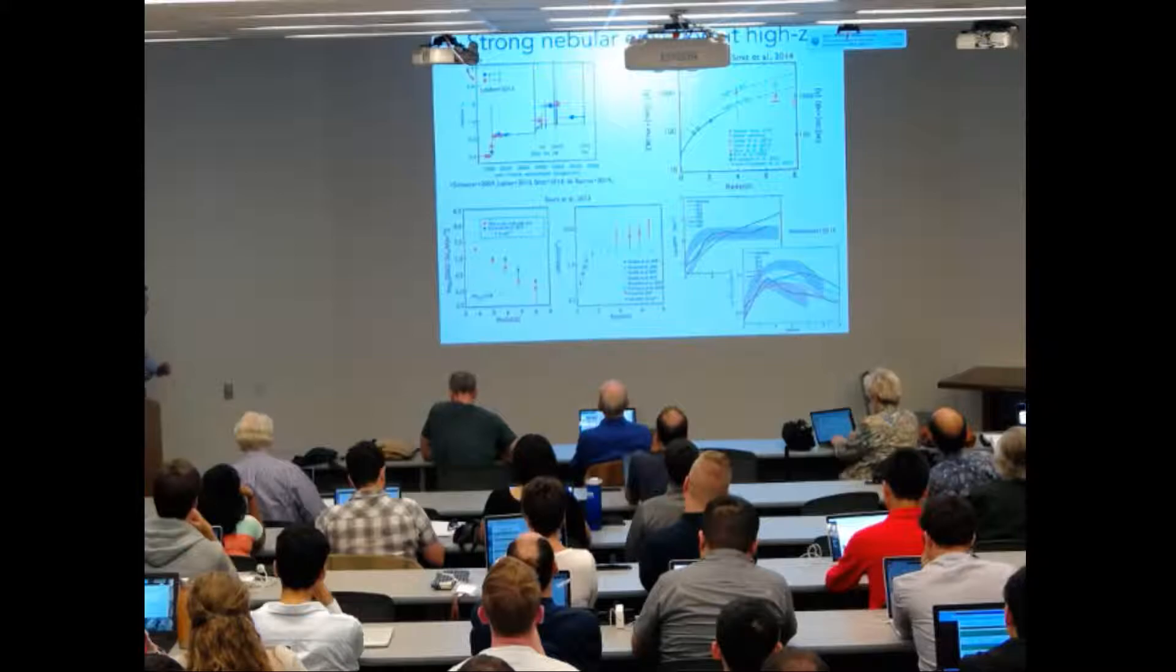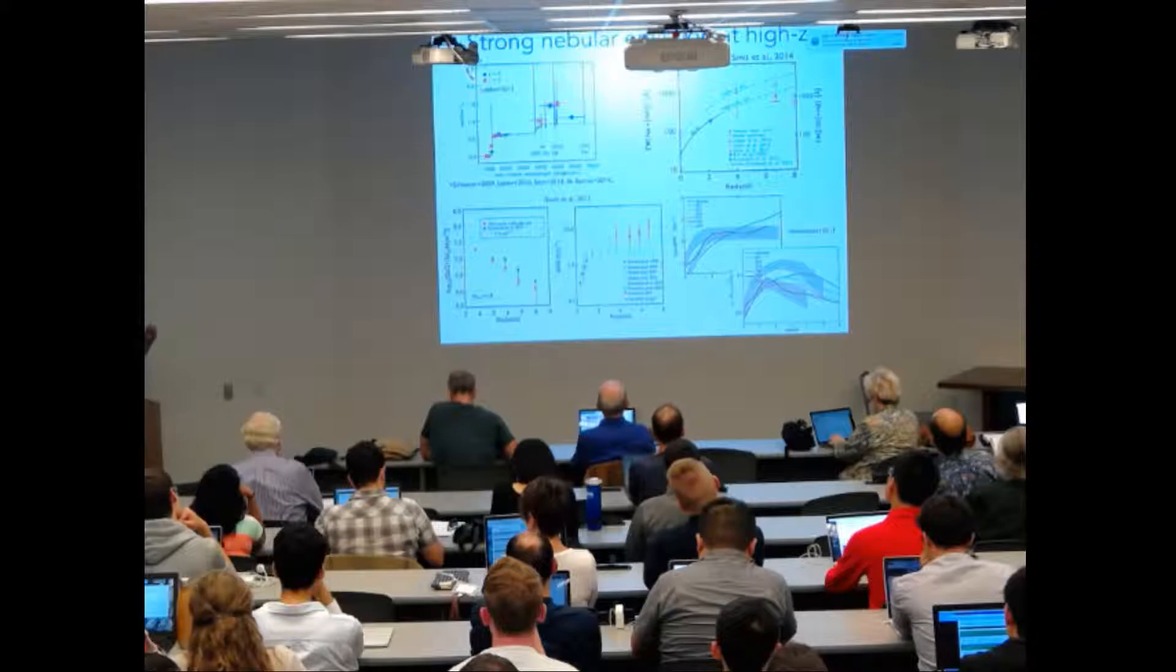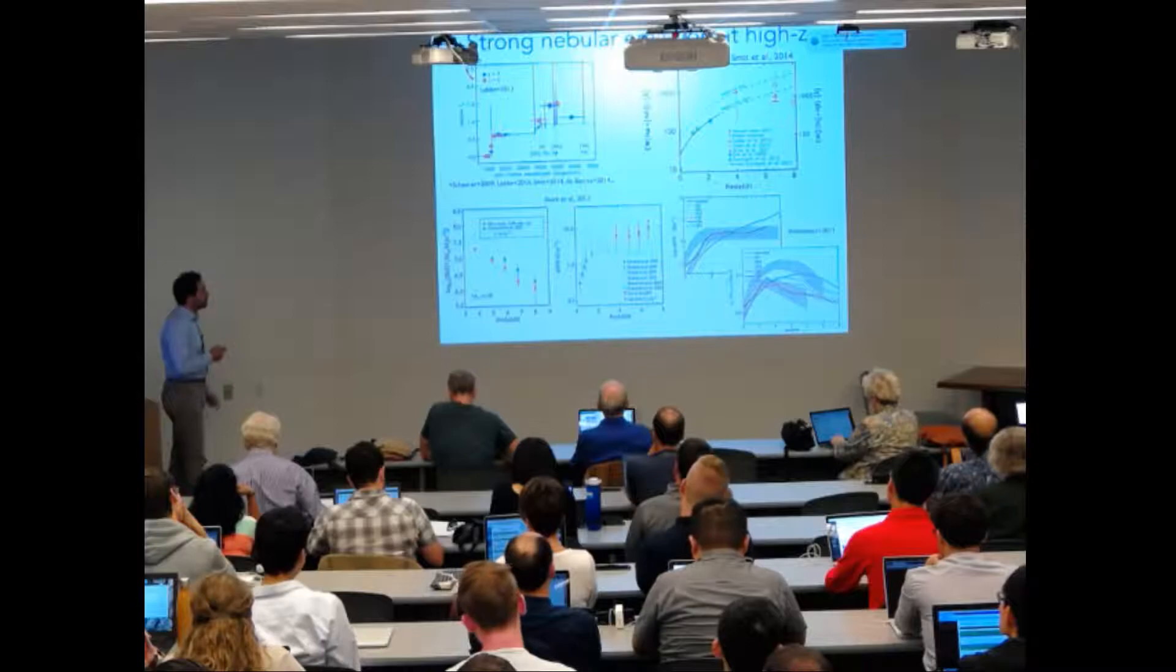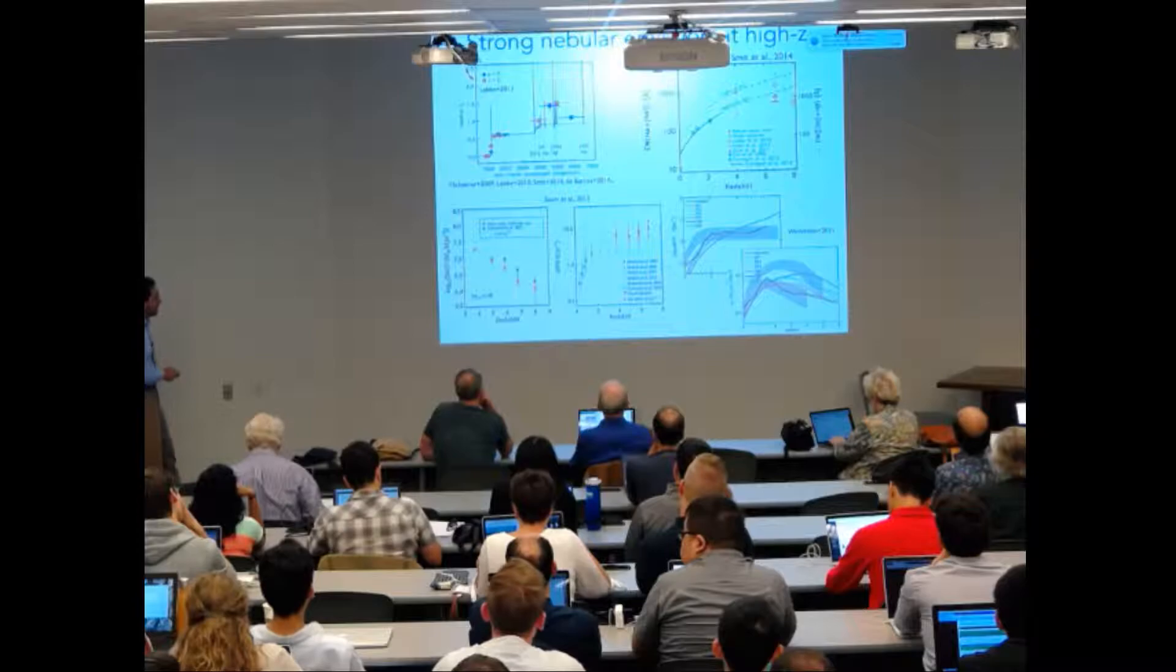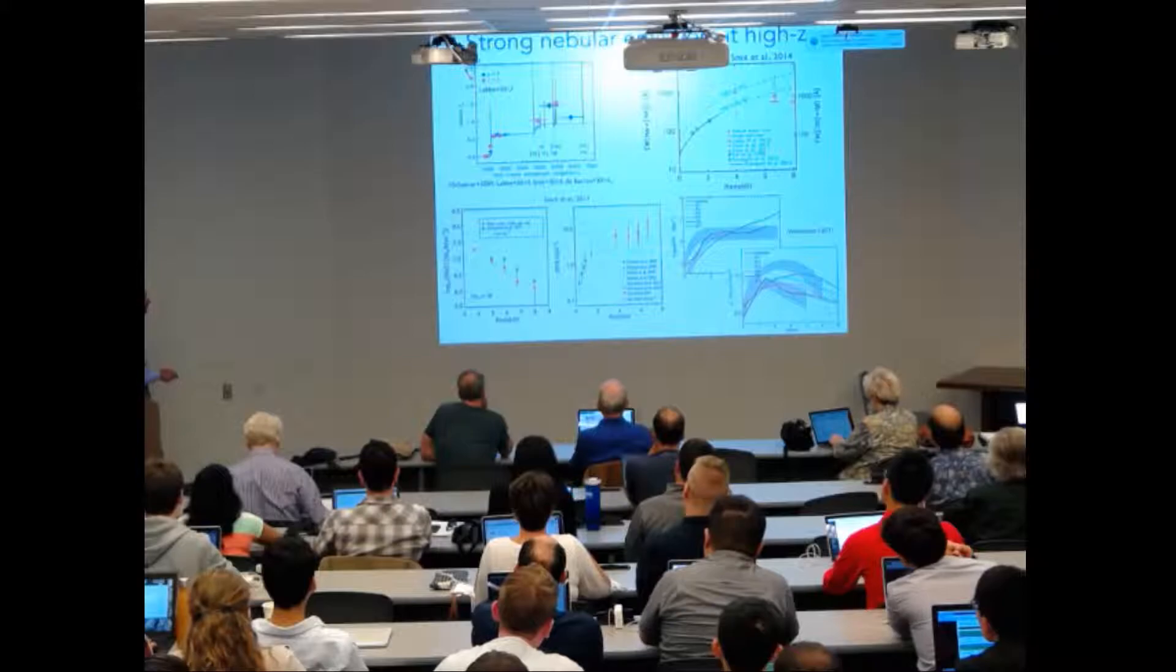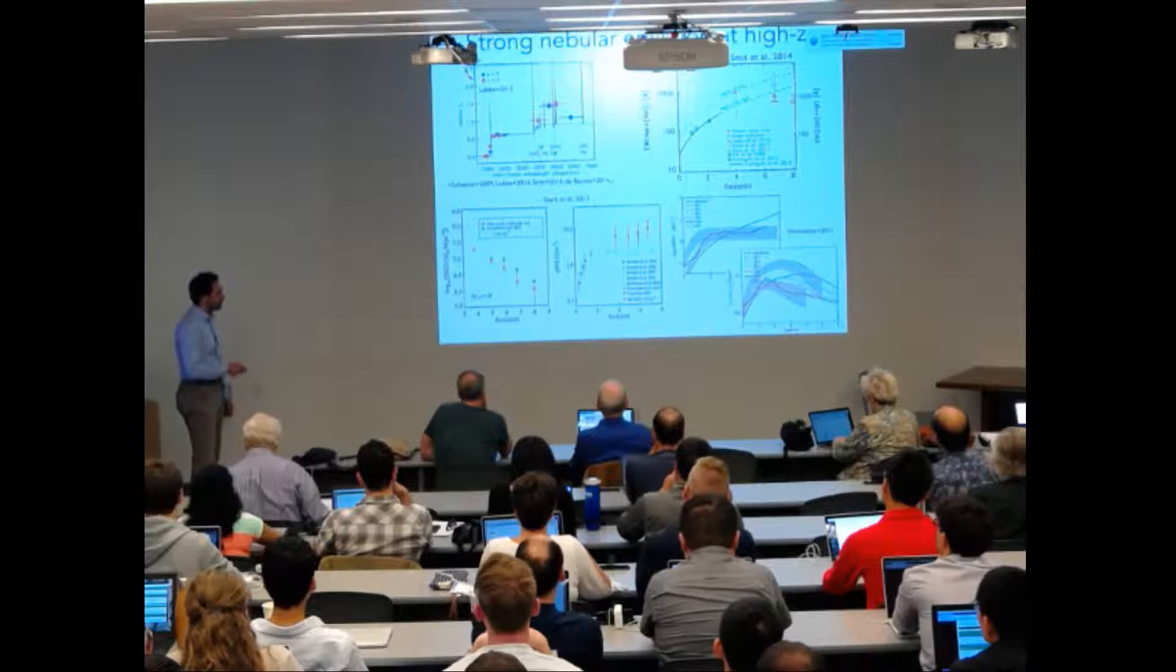We end up with galaxies of a given stellar mass characterized by quite a wide range of rest frame UV luminosity. Another important factor we need to take into account are nebular emission. A growing number of studies are showing that galaxies at high redshift are characterized by extreme emission lines, very high equivalent width emission lines, and this can